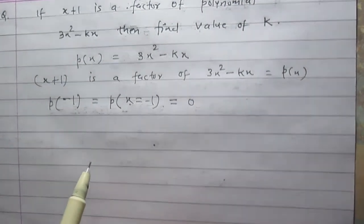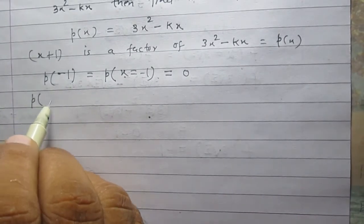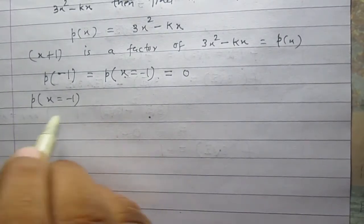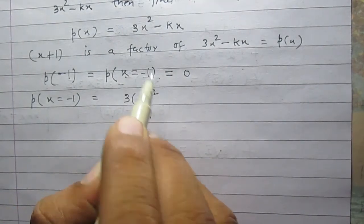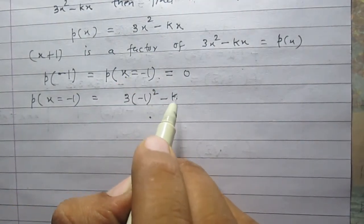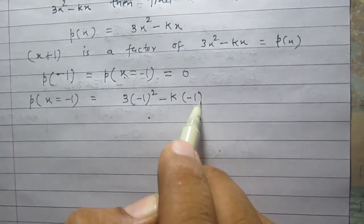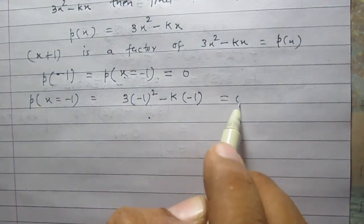Let us calculate the polynomial when x = -1. It is 3(-1)² - k(-1), and it equals 0.